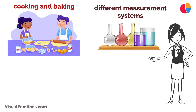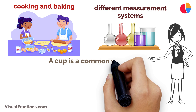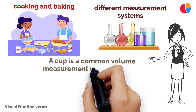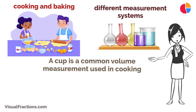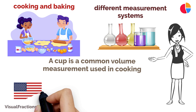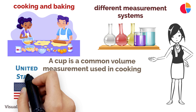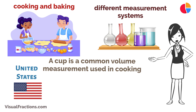Let's start with understanding the units. A cup is a common volume measurement used in cooking, especially in the United States. A milliliter, abbreviated as ML, is a smaller volume unit in the metric system, widely used around the world.